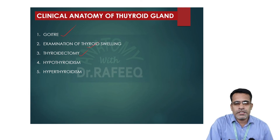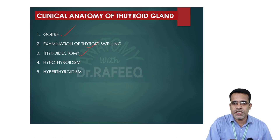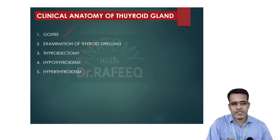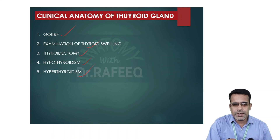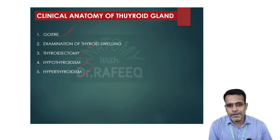Thyroidectomy is the surgical removal of the thyroid gland, performed in cases of huge goiter or thyroid carcinoma. During thyroidectomy, the surgeon must retain the posterior border of the thyroid to avoid accidental removal of the parathyroid glands, which are essential for maintaining proper calcium levels in the blood. Additionally, hyperthyroidism and hypothyroidism refer to conditions caused by increased or reduced levels of thyroid hormones respectively. That concludes the brief anatomy of the thyroid gland. Thank you.